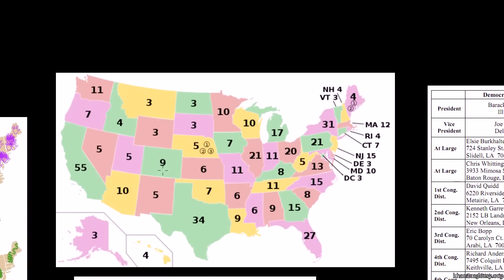Here you have the breakdown in the United States, by state, of how many electors each state gets. The number of electors is essentially the number of congressmen that state has. For example, California has two senators and 53 congressmen.